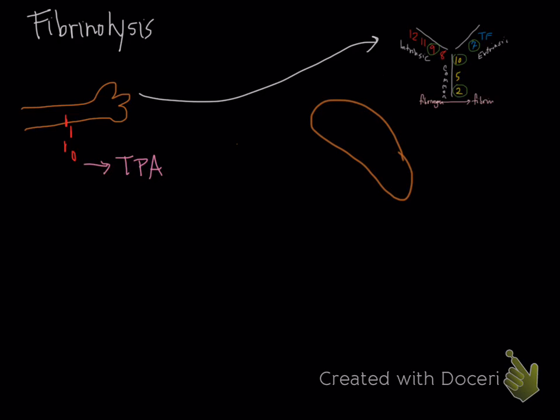Tissue plasminogen activator combines with something from the liver called plasminogen. The liver normally makes plasminogen and it circulates in the body normally. It's essentially just waiting to be activated by tissue plasminogen activator. When these two meet, they make something called plasmin. Plasmin allows for the cleavage of fibrin. The role of plasmin is to essentially break up clots.